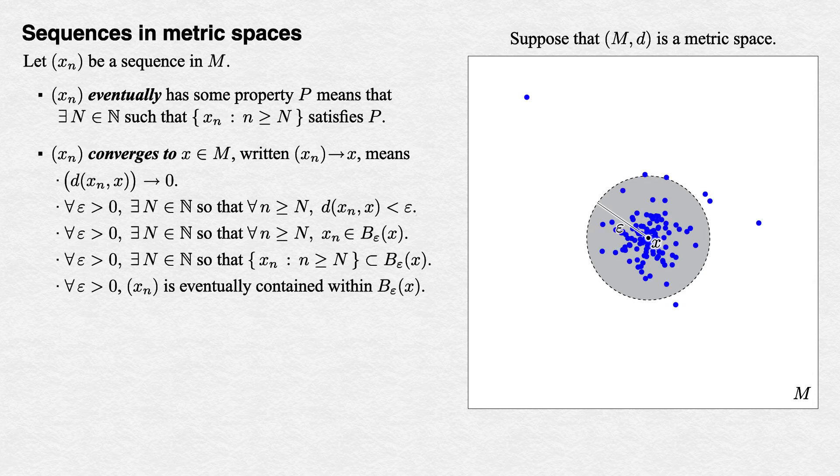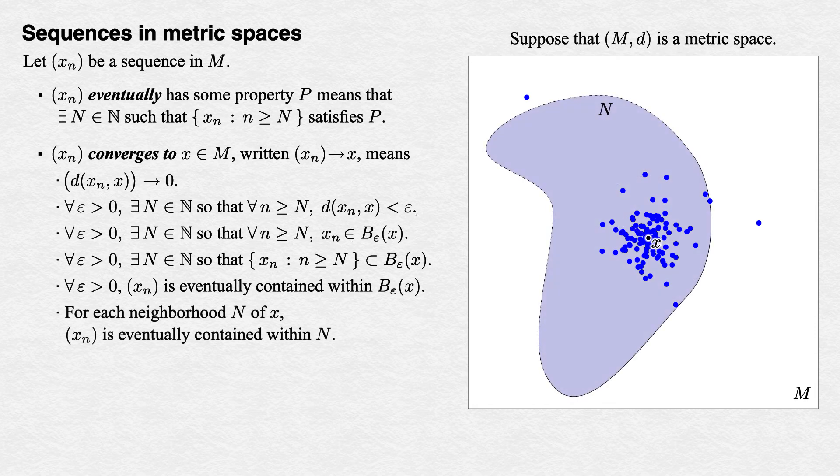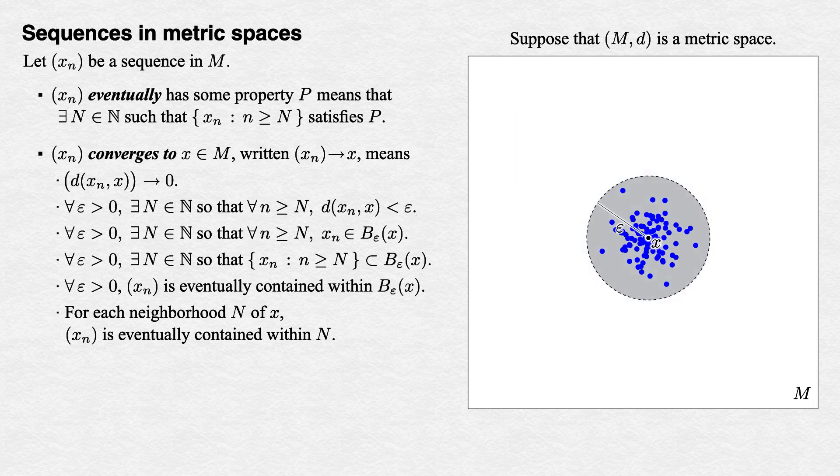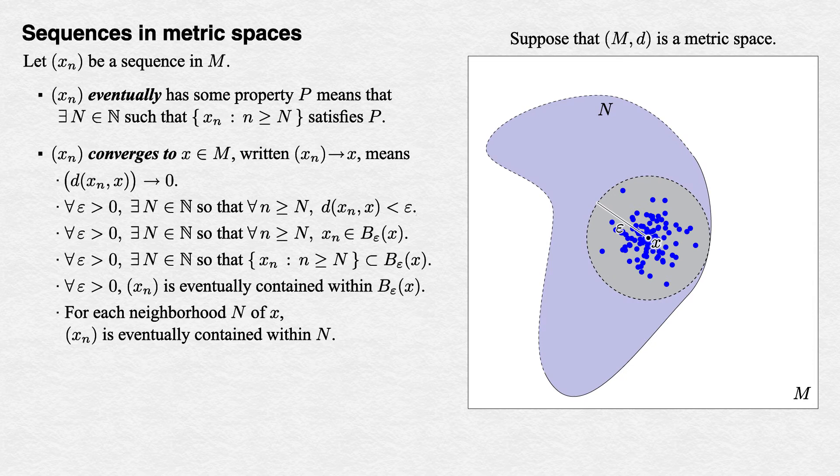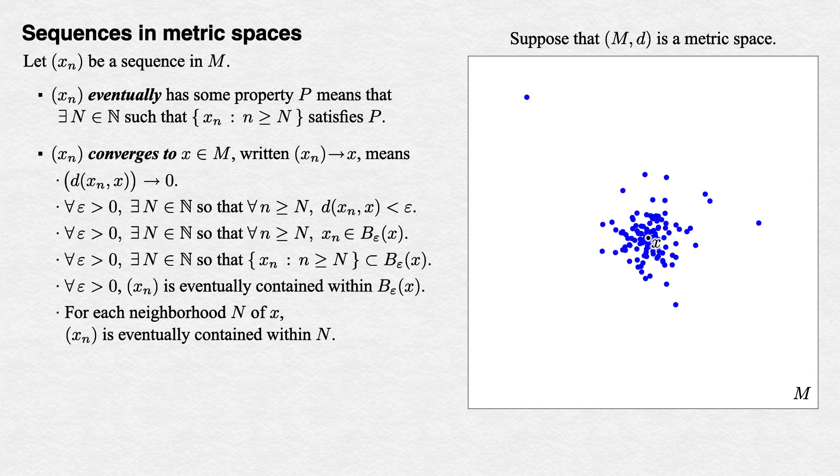We can go even further via neighborhoods if we like, which hides the number epsilon. For each neighborhood N of x, (x_n) is eventually in N. It's a quick exercise to show that this is an equivalent statement, as all of these open balls about x are neighborhoods of x, and every neighborhood of x contains an open ball of some radius about x.